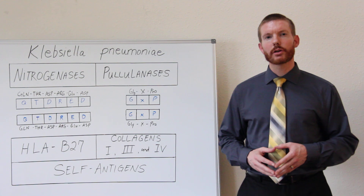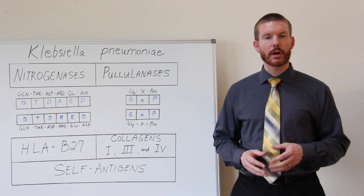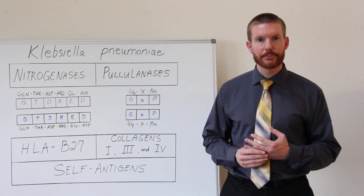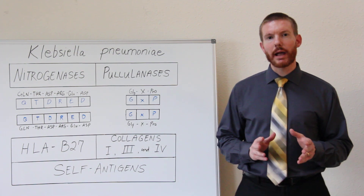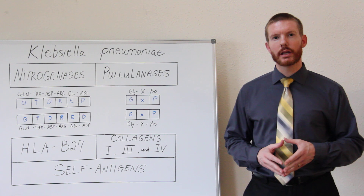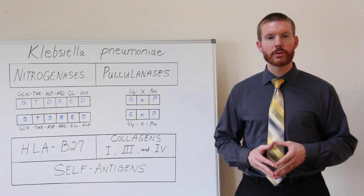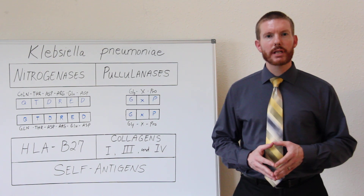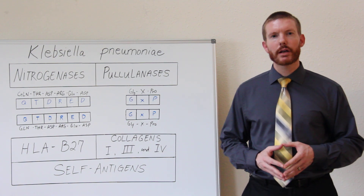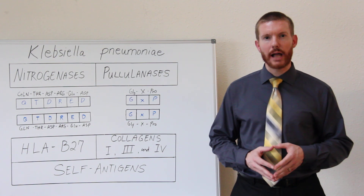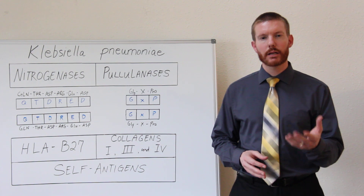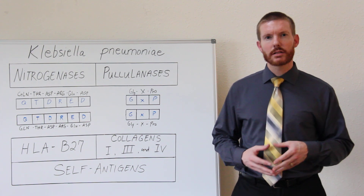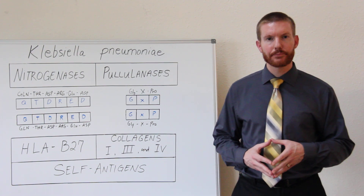The medical literature describes a process called molecular mimicry. Certain bacteria in the gut produce proteins. These proteins look very similar to collagen in ligaments, tendons, and discs of the spine.